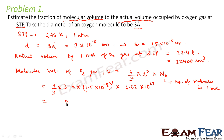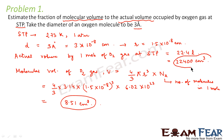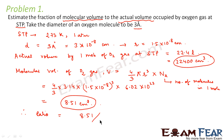This comes out to be 8.51 centimeter cube. So 8.51 cm³ is the molecular volume, and the actual volume was 22,400 cm³. The question asks us to calculate the fraction of molecular volume to actual volume, so we compute 8.51 divided by 22,400.